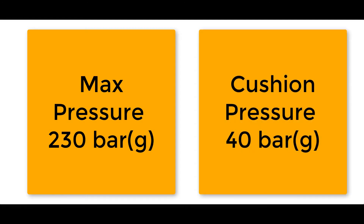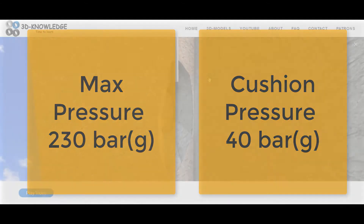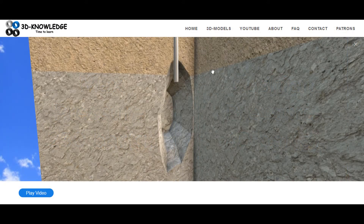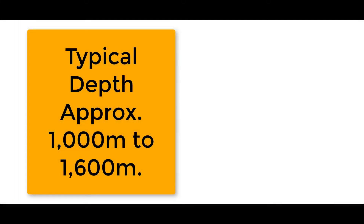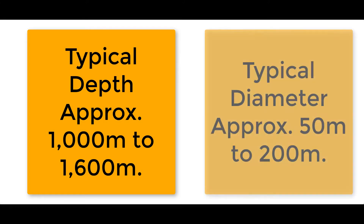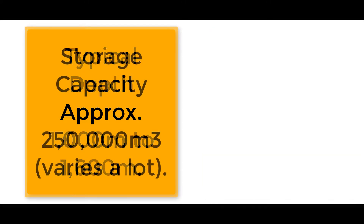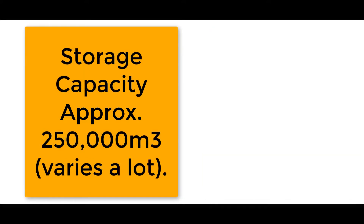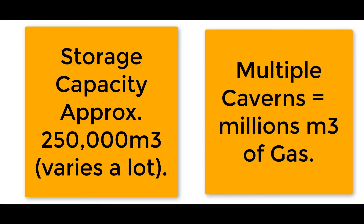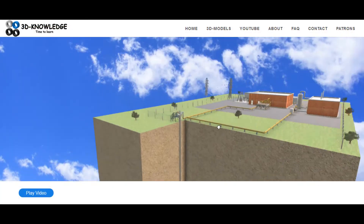A cushion pressure — the minimum operating pressure — is normally maintained in the cavern at around 40 bar, so you'll have somewhere between 40 and 230 bar depending on how much gas has been taken out. These caverns are typically sunk to a depth of 1,000 to 1,600 meters, can be a couple of hundred meters long and 60 to 100 meters in diameter, holding several hundred thousand cubic meters. You'll typically see multiple caverns at any one location.